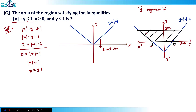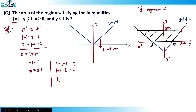Now this graph also intersects y = 1. Putting y = 1 into y = |x| - 1: |x| - 1 = 1, so |x| = 2, so x = ±2. That means the intersection points are (2, 1) and (-2, 1).